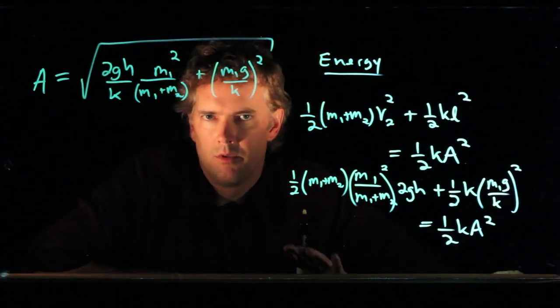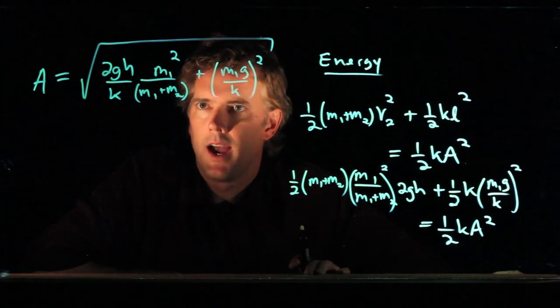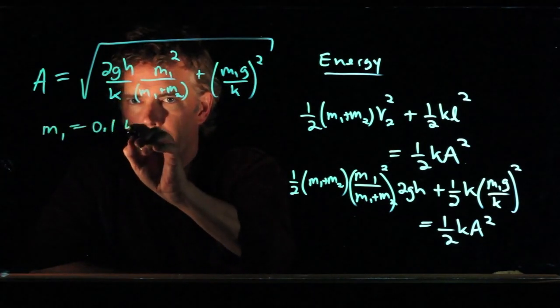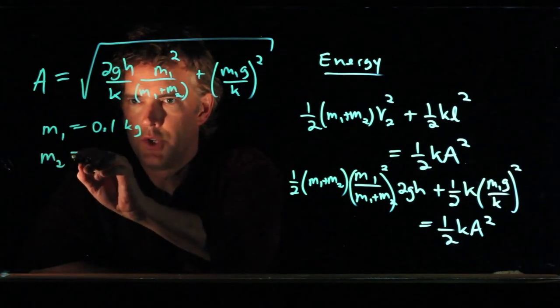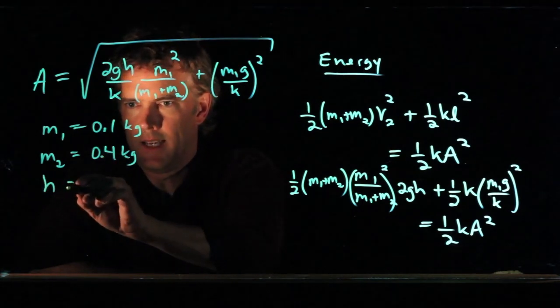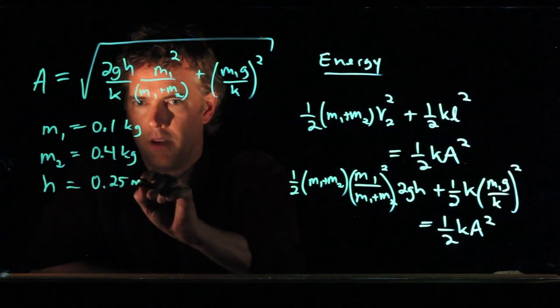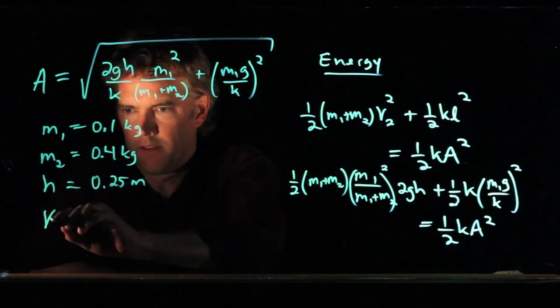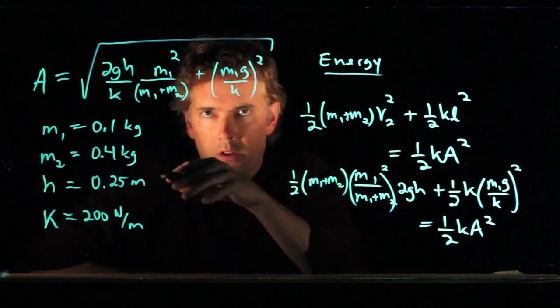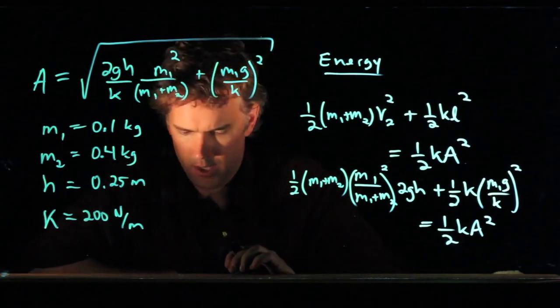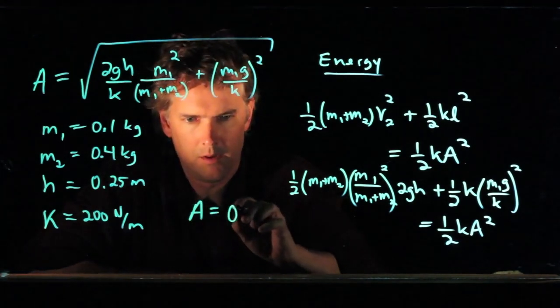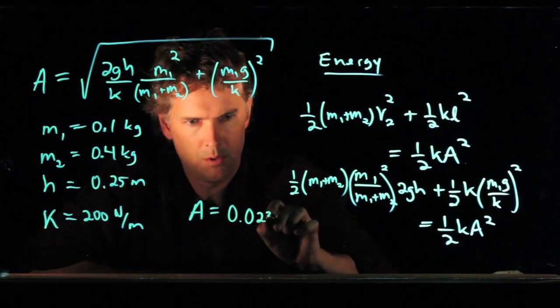Now let me give you a few numbers just as an example to try out. Let's say that M1 is 0.1 kilograms, M2 is 0.4 kilograms, the height H is 25 centimeters, and the spring constant K is 200 newtons per meter. If you try all those numbers in this equation, you should end up with amplitude A equals 0.023 meters.